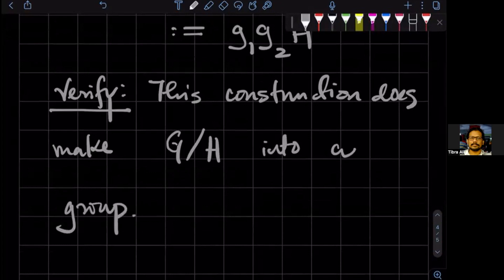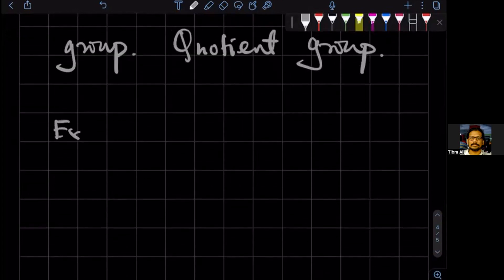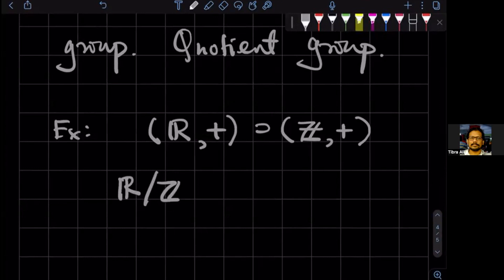And that group is called the quotient group. This is the coset group or the quotient group. And as an example, we can take the group of all real numbers under addition, and the integers form a normal subgroup of the real numbers. Therefore, we have, we can form a quotient group out of that. We can have R over Z.